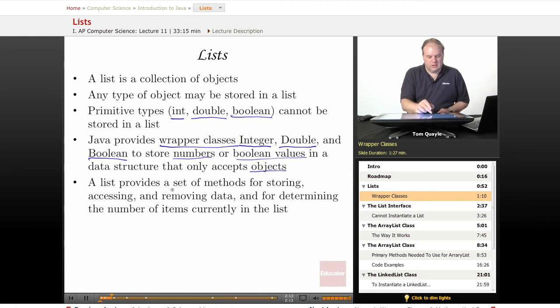A list provides a set of methods for storing, accessing, and removing data. Those are the three primary things that we do with a list, and also for determining the number of items that are currently in the list. These methods are all predefined. You don't need to do any work other than simply use them and use them correctly.